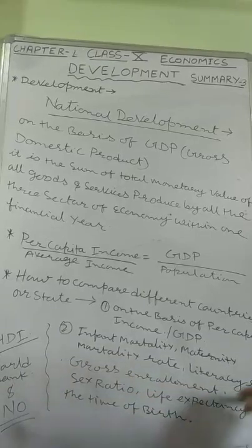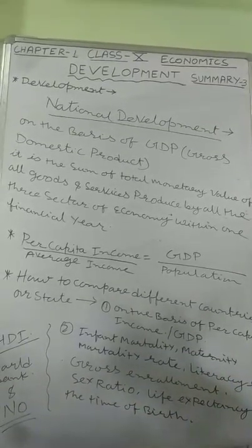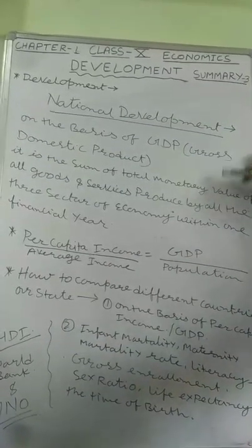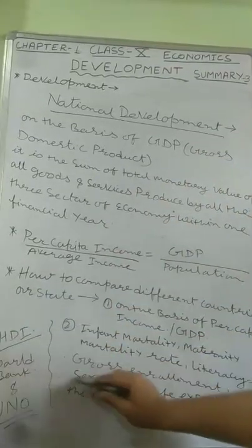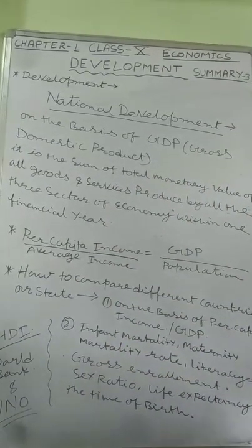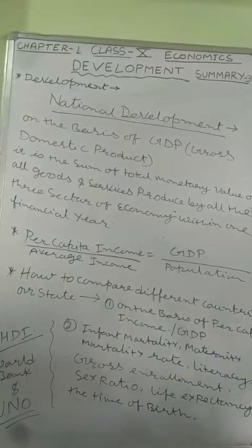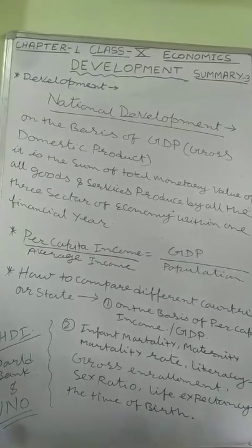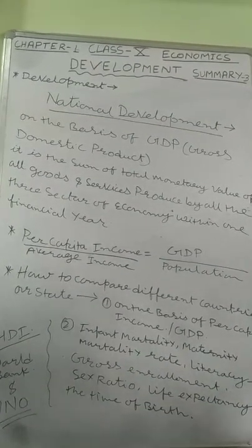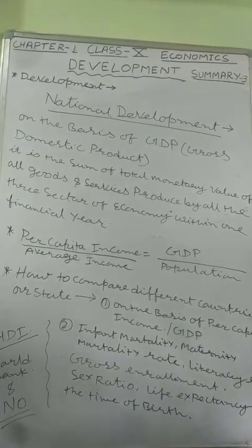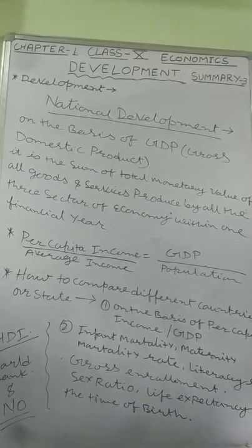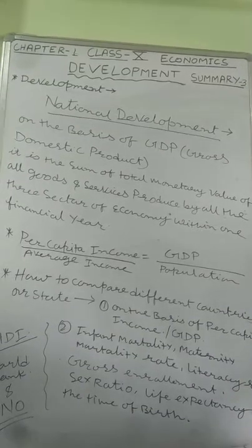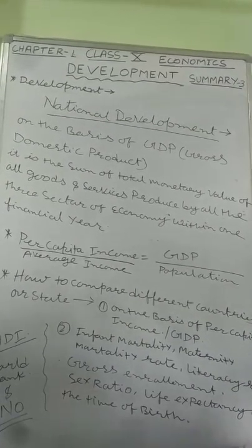These indicators are related to per capita income. Higher per capita income ensures a higher standard of living, and with a higher standard of living these indicators become better. In higher income groups you will not see high infant mortality rate or maternity mortality rate. In higher income groups, literacy rate will obviously be higher, sex ratio will be much better — as seen in Western and European countries — and life expectancy will be higher, as in Japan and many such countries.